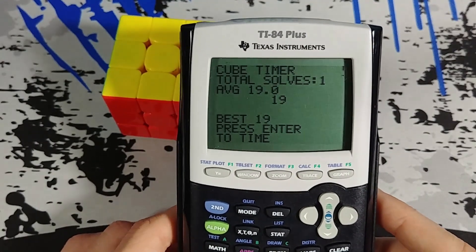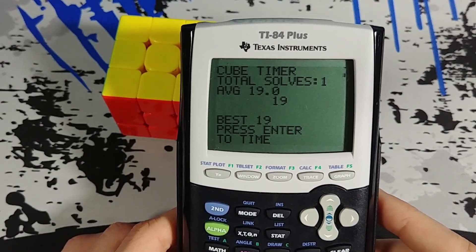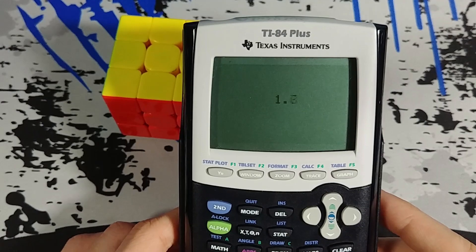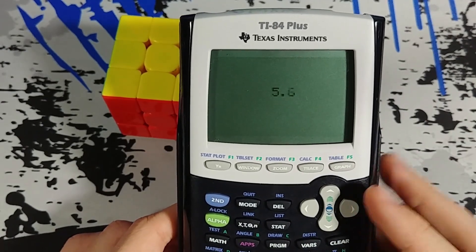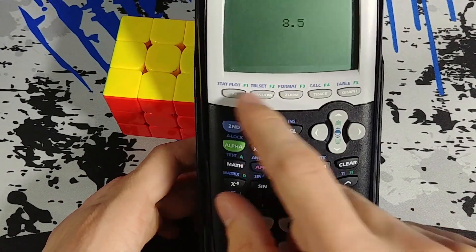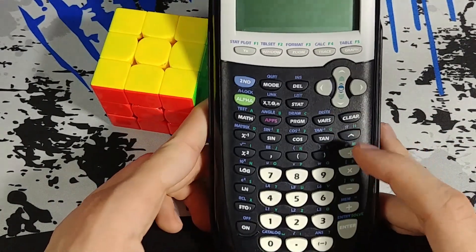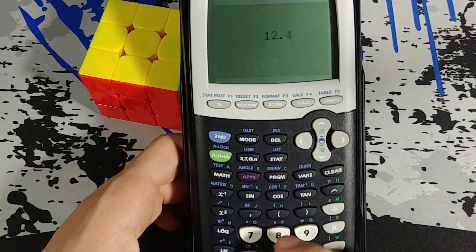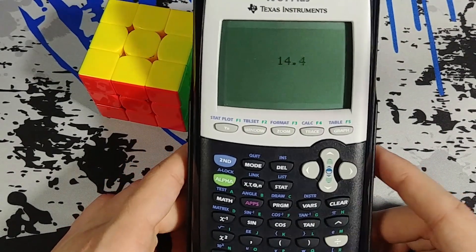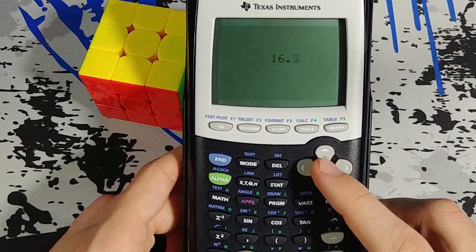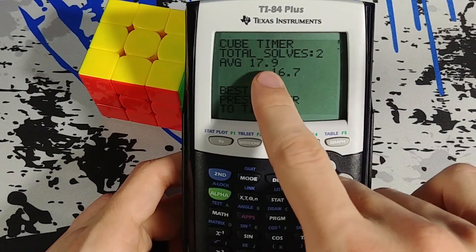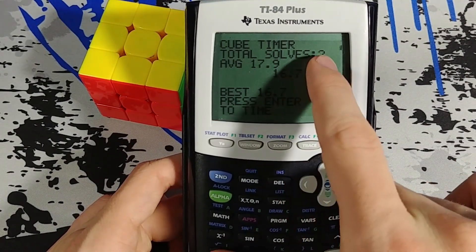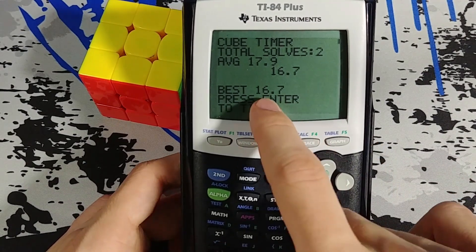So you can do this as many times as you want. Start it again. Let the timer run. And whenever I'm done I can press any button. Except I can't press the quit button because that will quit the program. And I can't press the on button because that's actually used to break programs if you get stuck in an infinite loop. So any button will stop it. Timer stops. And you can see that it actually adjusted my average between my two solves now. And it adjusted my best time.